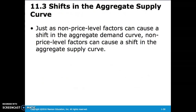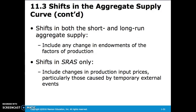In both aggregate demand and aggregate supply curves, non-price level factors cause shifts. Any change in the endowments of the factors of production — that is, more labor or capital — can shift both short- and long-run aggregate supply. However, changes such as production input prices, particularly those caused by temporary external events, only shift the short-run aggregate supply curve.